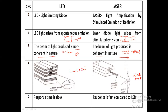In laser, there is an optical resonant cavity, whereas such cavities are not present in LED. Because of this, particular wavelength selectivity is not possible in LED, and the photons are out of phase in the LED structure — quite the reverse of what happens in the laser structure.